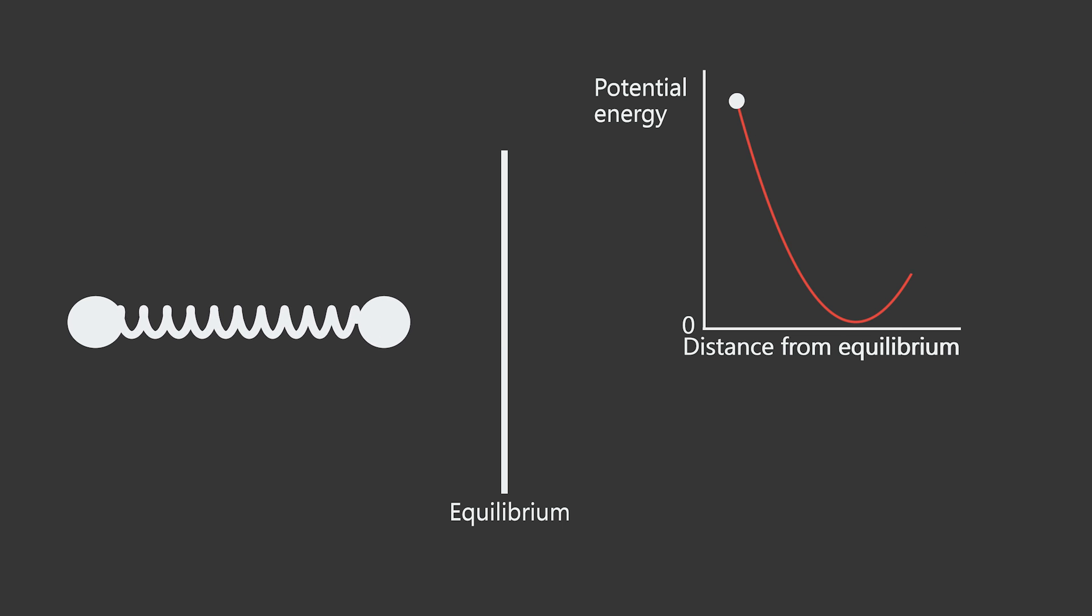But when there is small kinetic energy in the system, the spring, as we just concluded, takes more energy to compress than to stretch. And this is shown in the Morse potential.